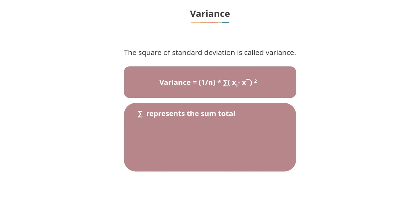Sigma represents the sum total. X represents observations. X bar represents mean. N represents the number of observations.